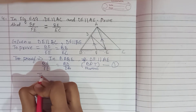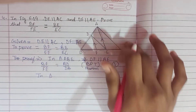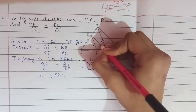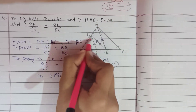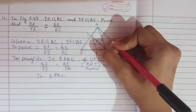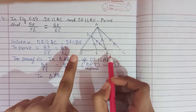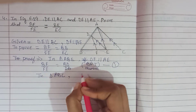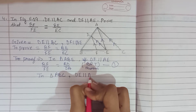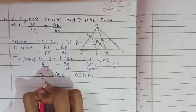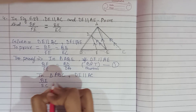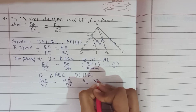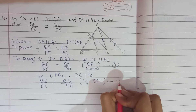Next we have to take triangle ABC — this big triangle. In this triangle it is given that DE is parallel to AC. So by the basic proportionality theorem, we can write that BE by EC is equal to BD by DA. We take this as equation 2.